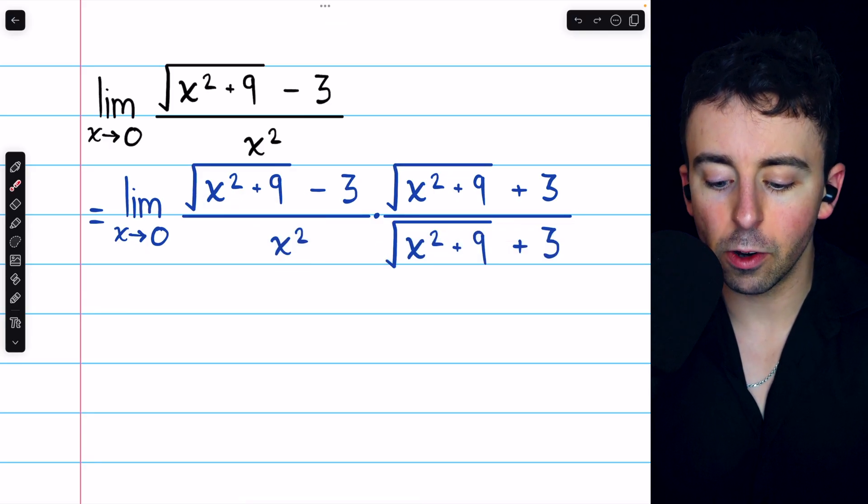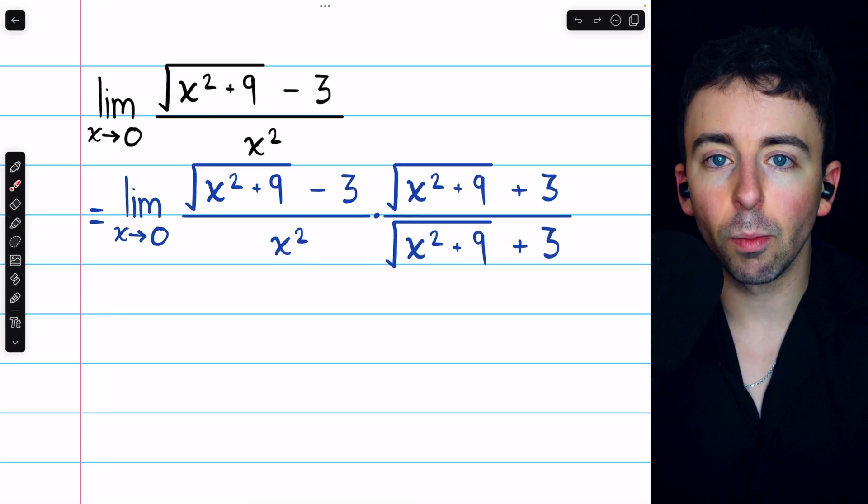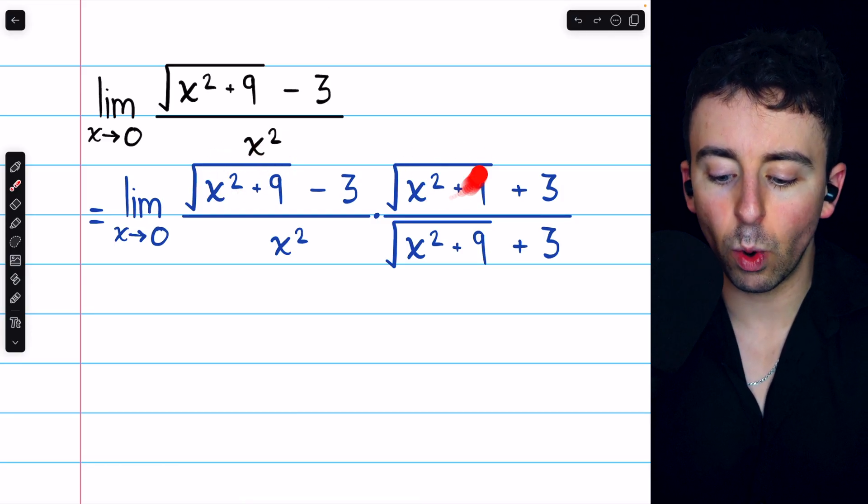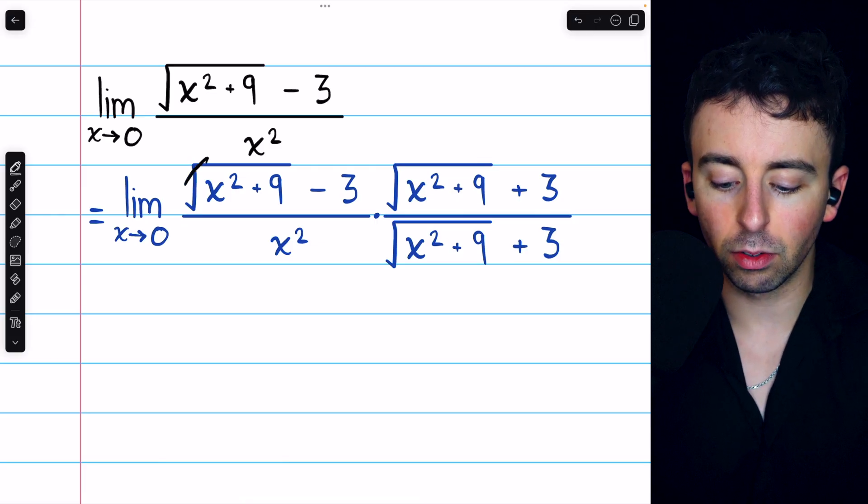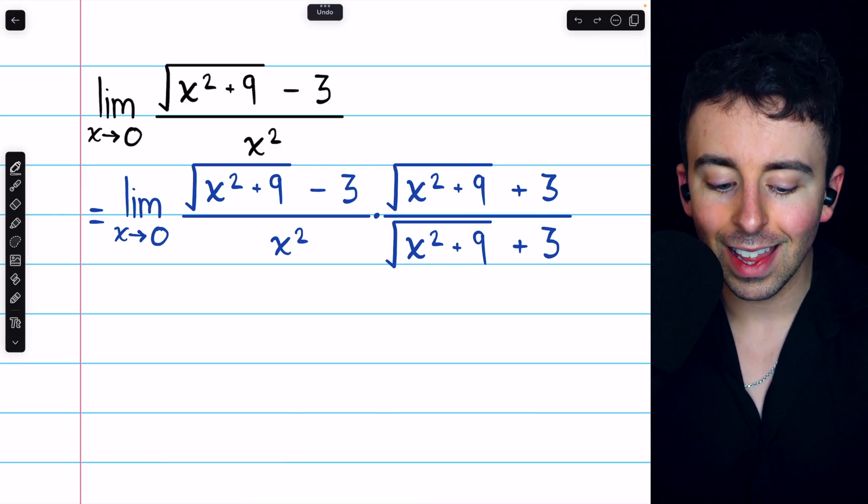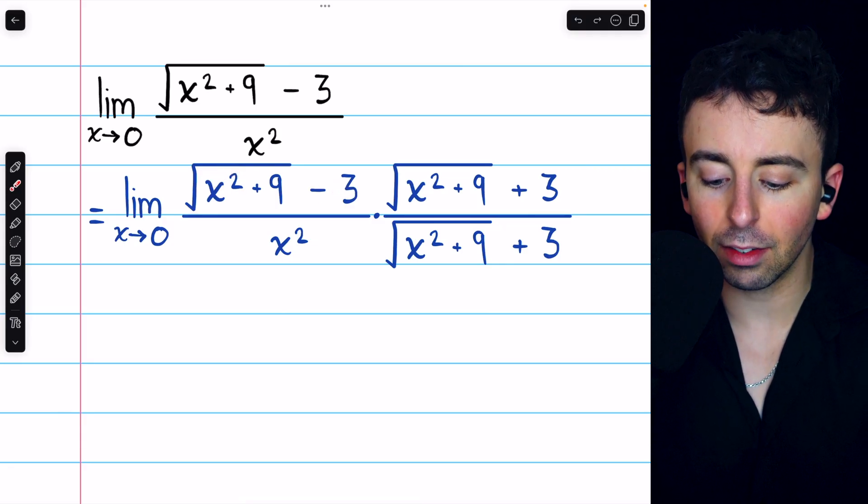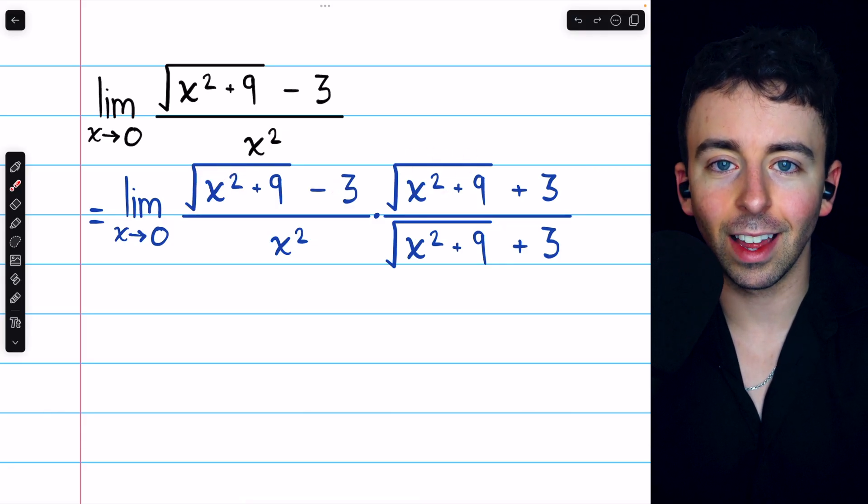But in the numerator, distributing is going to help us out a lot. What's going to happen is we'll get the square root of x squared plus 9 times the square root of x squared plus 9, and so the square roots would just cancel out. Then we'd have 3 times that square root and minus 3 times that square root. Those two things cancel out.